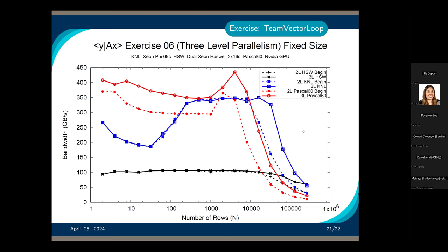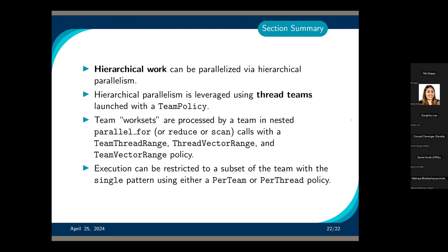Here is the output for the exercise. Using an older architecture, so actual bandwidth will differ, but the general trend shows a bump in bandwidth across all thread counts, and higher bandwidth is achieved with a lower number of rows. Previously we needed to reach around 1000 rows. With the extra loop added, comparing the two-level and three-level implementations, the three-level implementation using ThreadVectorRange accomplishes a bit higher bandwidth across all numbers of rows.